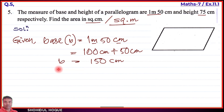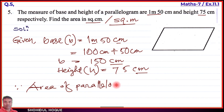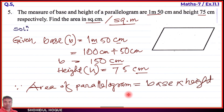Height (H) is equal to 75 centimeters. Now both units are in centimeters, so we can apply the formula. Since area of parallelogram equals base into height, we substitute: base value is 150 centimeters, and height value is 75 centimeters.